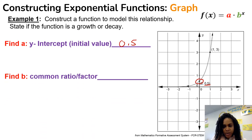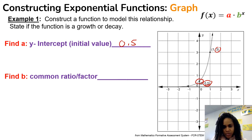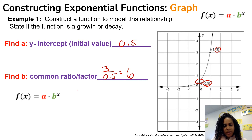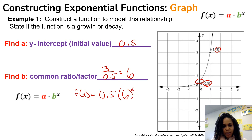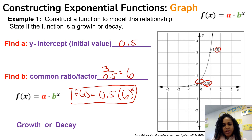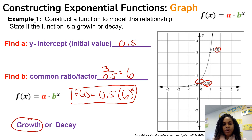Next, we want to find the common ratio. We look at our y-values — here we have a 3 and a 0.5 — and we divide: 3 divided by 0.5 equals 6. Then we write the function: f(x) = 0.5·(6)ˣ. That is the function. The graph goes up from left to right, so this is a growth. We also note that b = 6 is greater than 1, which confirms it is a growth.